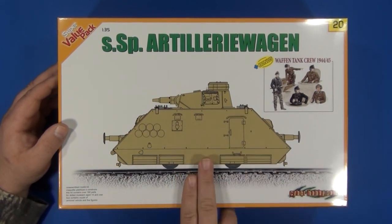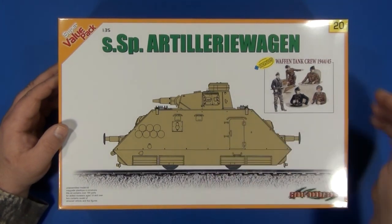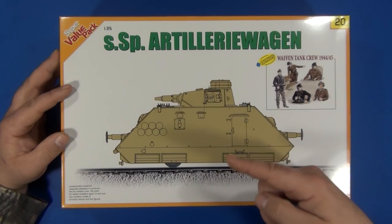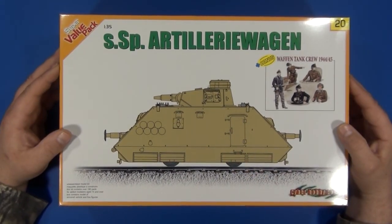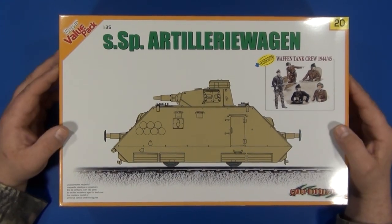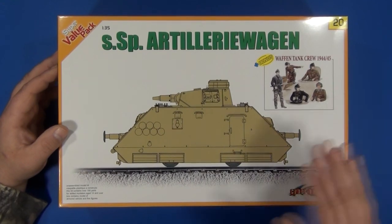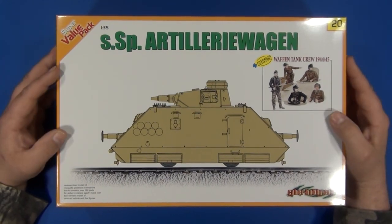There would be a German motorcycle with a sidecar that was pulled up, and they would be talking to the crew of the artillery wagon. Who knows what they'd be talking about - maybe there's some resistance farther down the track that they're trying to warn them about, or something to this effect. But I thought it would just be kind of a nice little low-key diorama to display such an interesting vehicle as this. So with that, I hope you enjoyed this review and happy modeling.